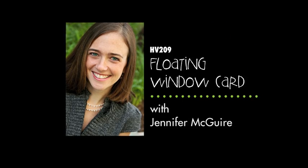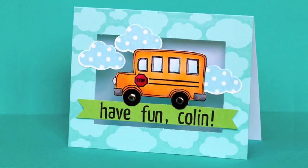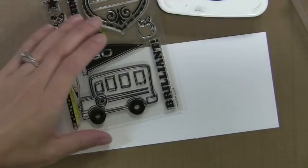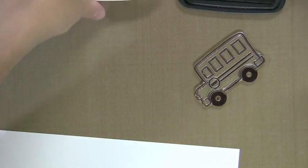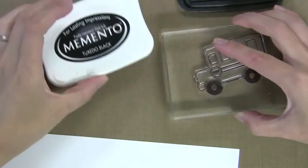Hi there, this is Jennifer McGuire of Hero Arts. I wanted to show you how to do this window card that has some elements that float over the window. I'm first going to start by stamping this bus element. This is from a Hero Arts basic gray stamp set and I'm stamping it on Neenah cardstock with Memento black ink.